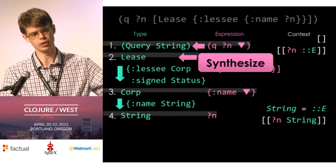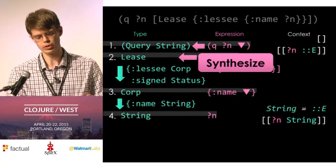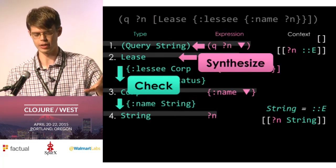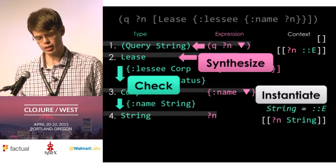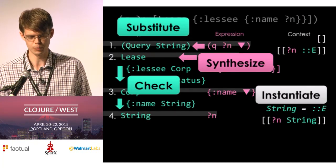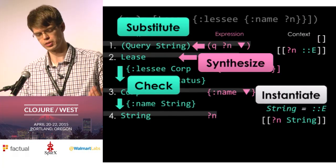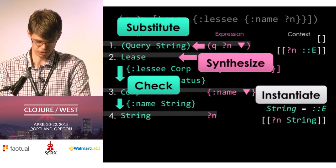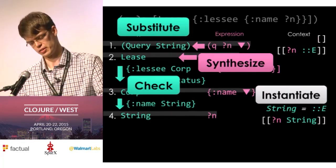This is called bi-directional type checking. Synthesis is when we look at an expression and know what type it ought to be. Checking is when we know the type from context and pass that down to compare. Instantiation is when we look at a variable, compare it to context, and maybe update. Substitution is when we're done and update the types to reflect the knowledge we've learned. We don't actually use these terms in our type checker because it's so simple you can write it all as one function.